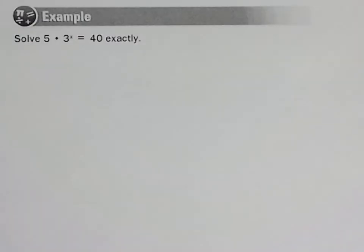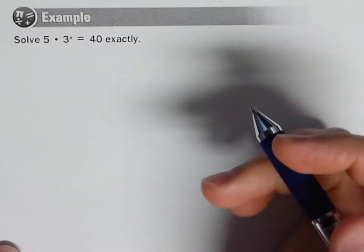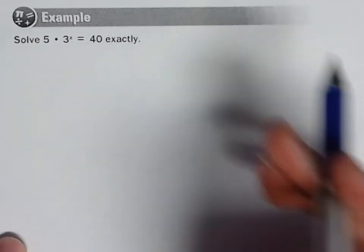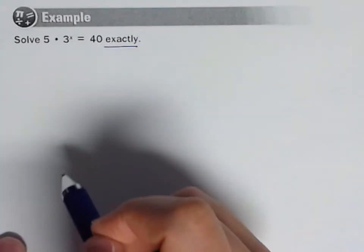Okay, so we are solving exponential equations today. Let's just walk through the steps. We've got a little equation: 5 times 3 to the x equals 40. They asked for an exact solution. I'm also going to show approximations, which is pretty easy to do.